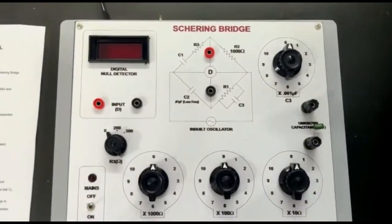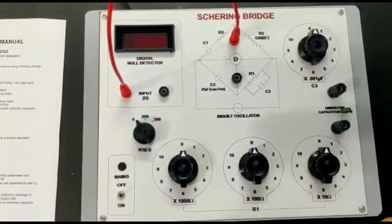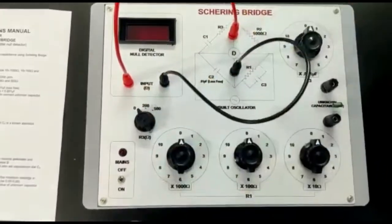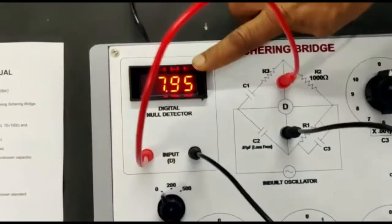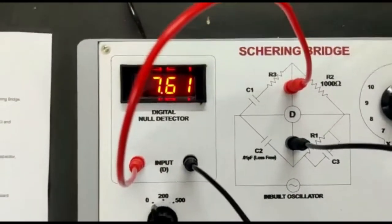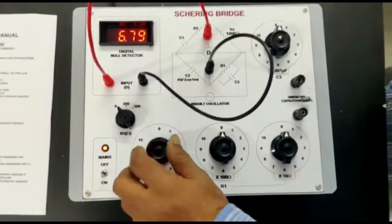Now connect the digital detector and switch on the instrument. There will be some reading in the digital detector. Now use this dial to minimize the reading.